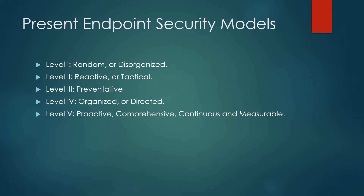Level three is preventative, where a formal policy exists but may not have been updated recently and policies lack technology enforcement; hardware and software inventory exists but updates are irregular. Level four is organized or directed, with formalized functional policies and a formal active review cycle, and automated up-to-date hardware and software inventories. Level five is proactive and comprehensive, where a continuous and measurable security program is designed and executed to anticipate change, aligned with IT, procurement and business risk, and endpoints are configured, provisioned according to standards, locked down and monitored continuously.